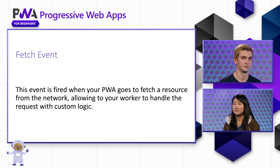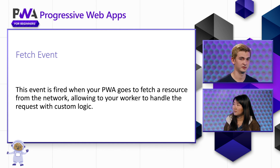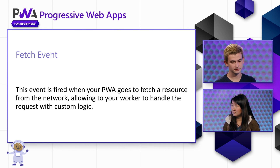Now that we have a service worker that is registered, installed in the browser, and activated, the fetch event is kind of the big event — it's the main event we're going to be concerned with for service workers. This event is fired whenever our progressive web app makes a request to the network, whenever it goes to fetch something. In handlers for our fetch event, we can handle requests with custom logic and provide fallback behavior for when we can't access the network. This often includes making use of caches. In the next video, we'll take a deeper look at how to make effective use of both caches and the fetch event handler.